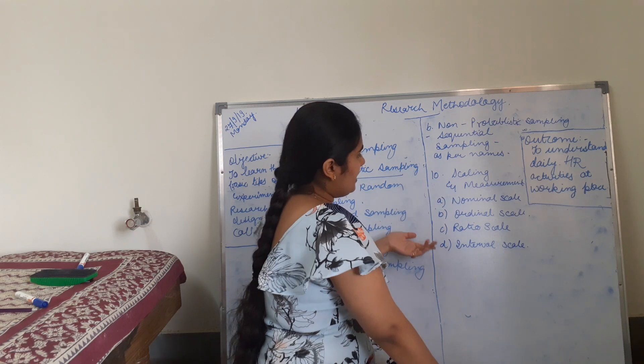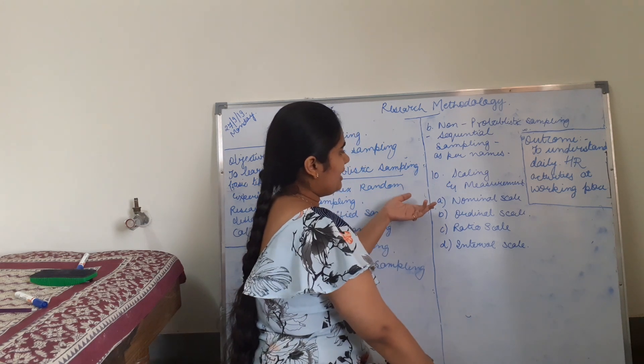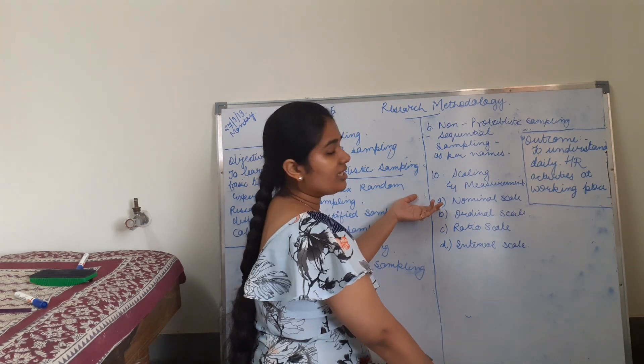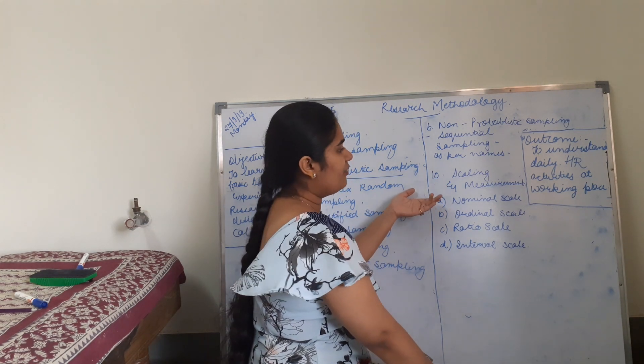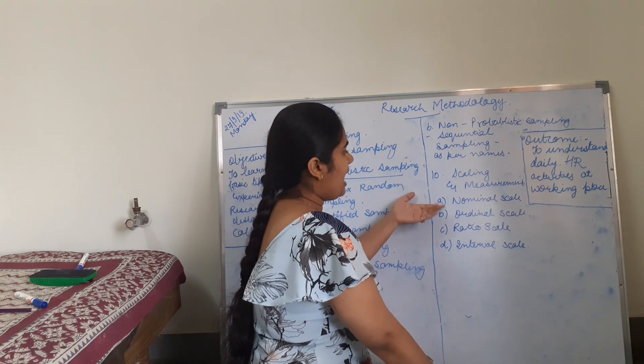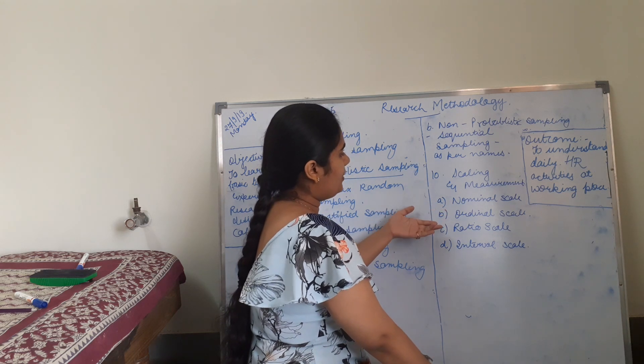So next is scaling and measurement. What is scaling and measurement? A is nominal scale. For example, good, very good, excellent, average — these are nominal scale categories.